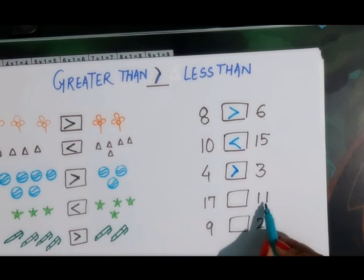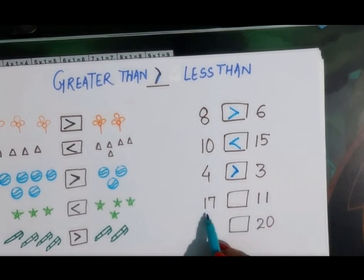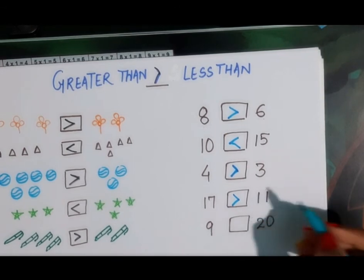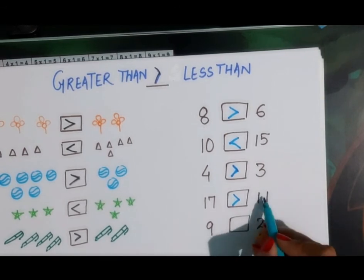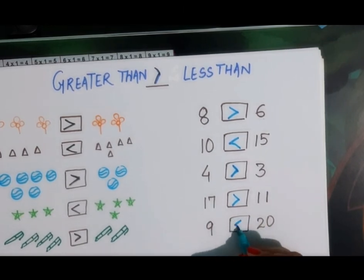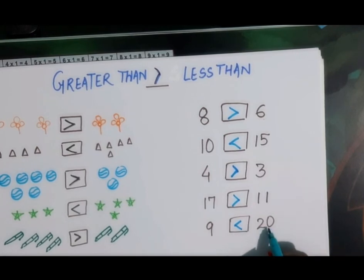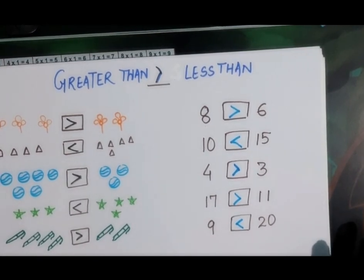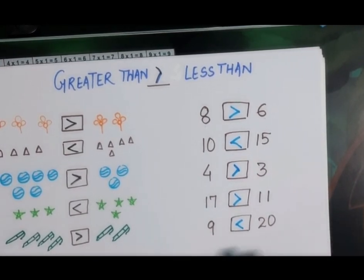Then seventeen and eleven — seventeen is greater than eleven, and eleven is less than seventeen. Then nine and twenty — nine is less than twenty, and twenty is greater than nine. This is how we compare numbers by using these signs.